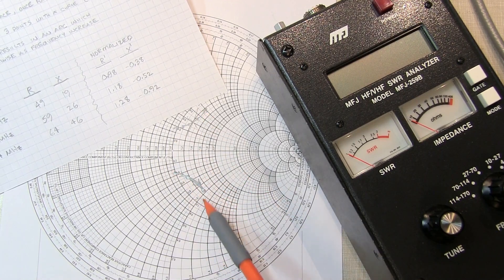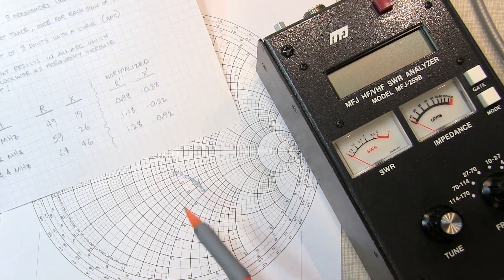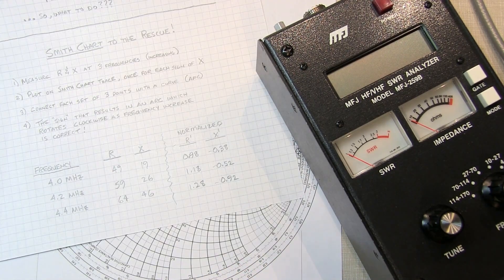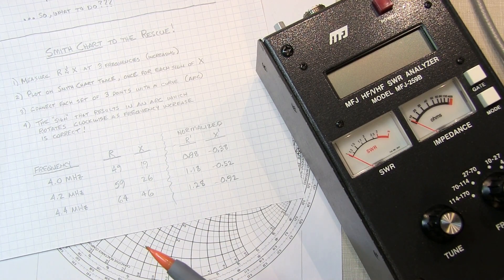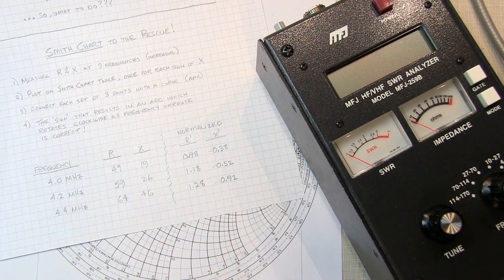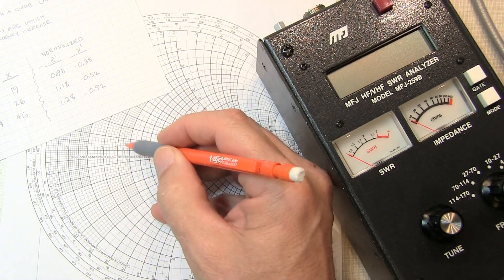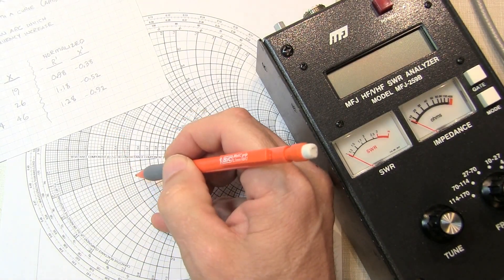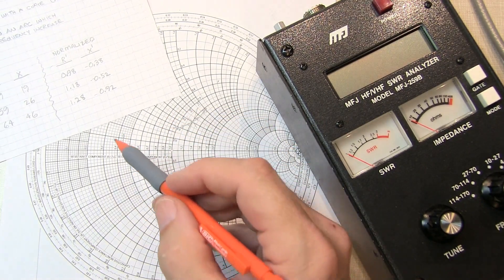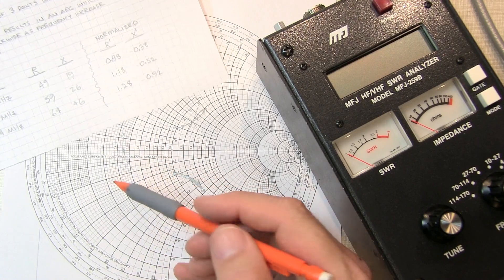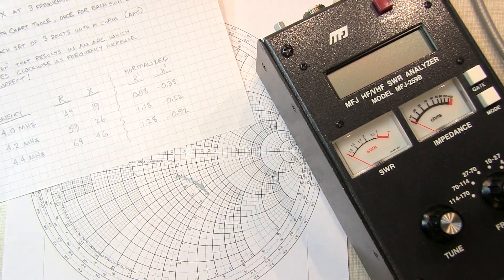Now, there is one situation where this method could prove a little tricky and just requires a little attention when you're collecting data, and that's when you happen to pick a frequency set of points that crosses the real axis, and maybe it crosses over in this direction like that, in which case the real values of the imaginary component might be positive and negative within the same dataset that you collect.